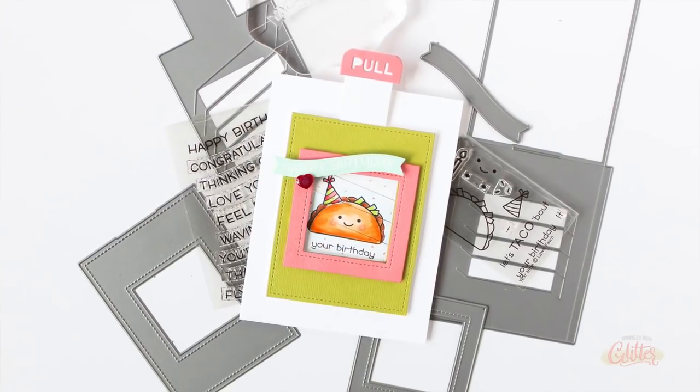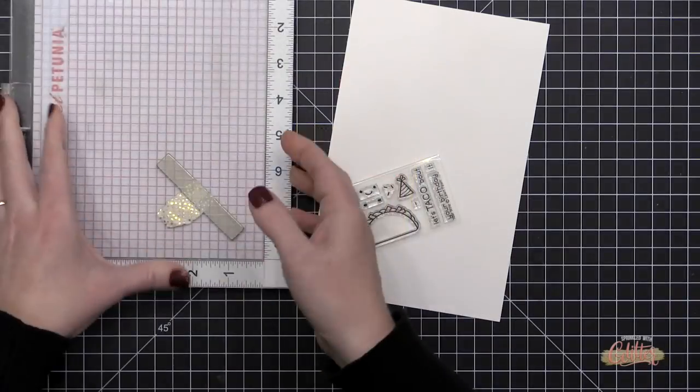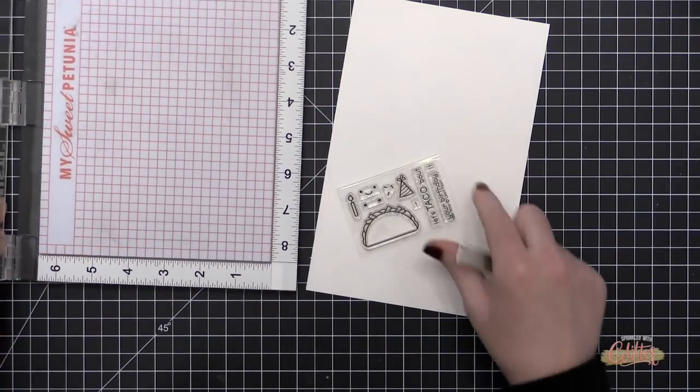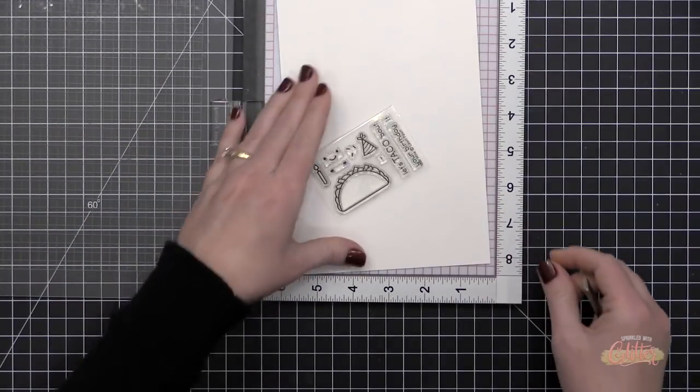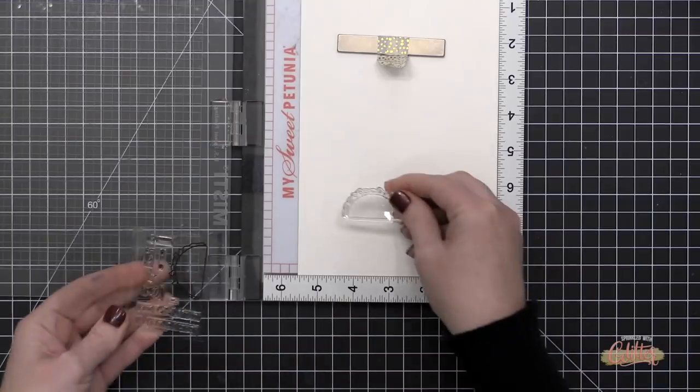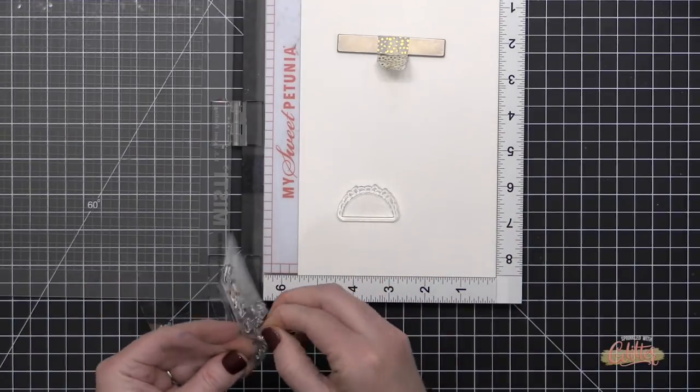I'm going to show you how to put this together. I decided to keep the card overall pretty simple because I really wanted to focus on putting this picture changer together. I think you're going to be surprised at how easily this interactive card comes together, and I love dies like this that help you add a little something extra to a simple card.